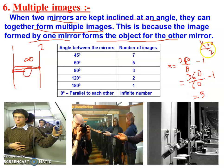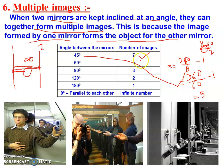These two mirrors inclined at 60 degrees form five images. Looking at the table: if the mirrors are at 45 degrees, seven images will form — 360 divided by 45 is 8, minus 1 is 7. If the mirrors are at 90 degrees, substituting 90 in place of theta gives 4 minus 1, so 3 images will form.